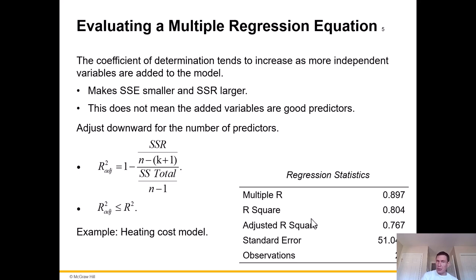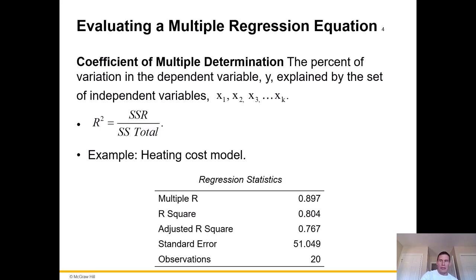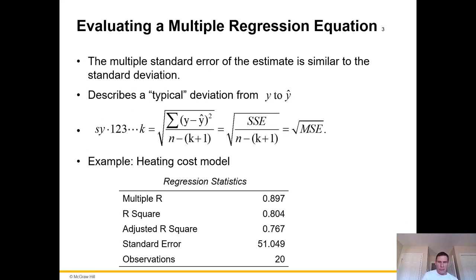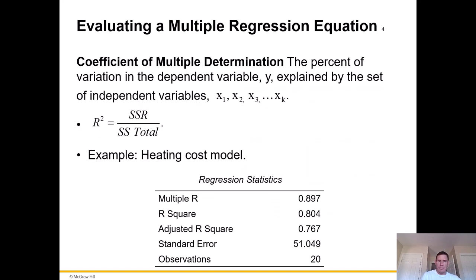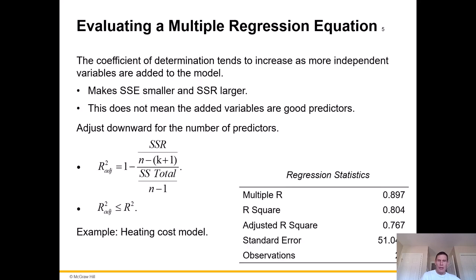It doesn't mean that the added variables are good predictors — they may not explain a whole lot of the variance, maybe just a little bit, so the error goes down a little bit and the regression sum of squares goes up a little bit. If we were adding more variables, the error term would go down and the regression SS would increase because we're just explaining more of the model.